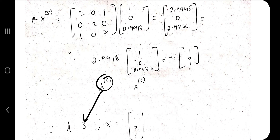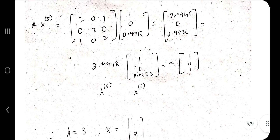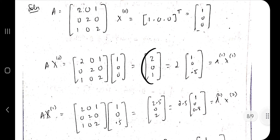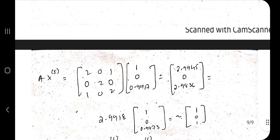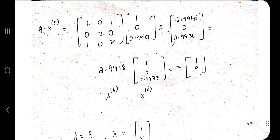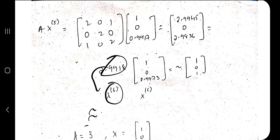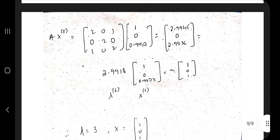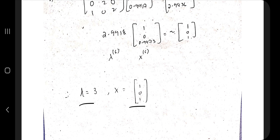After five iterations, pick the largest value from the resulting vector — for example, 2.9918 or 2.9945 — and approximate it to get the final eigenvalue λ. Write the corresponding eigenvector as well. That's the largest eigenvalue and eigenvector for the given matrix. These types of questions are repeated in previous year papers, so focus on them. That's all for Module 5 — thank you for watching, see you in the next one!